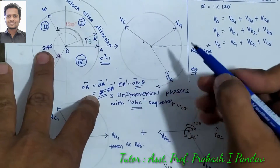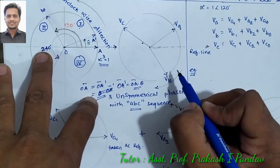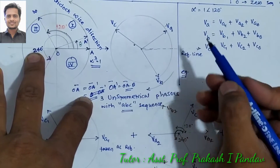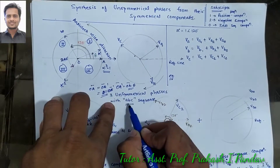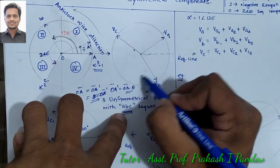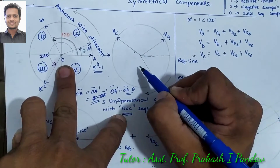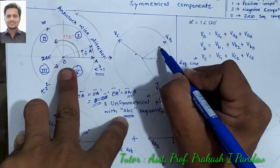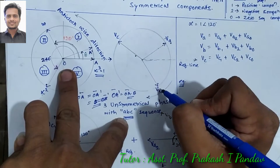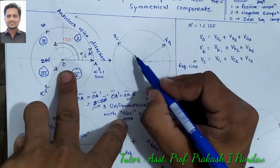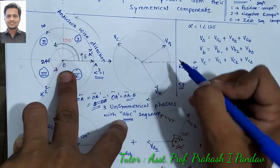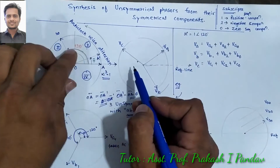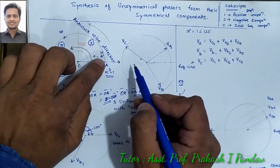Now if we take an example of a faulted system in which an unsymmetrical fault has occurred, we have unsymmetrical phasors with ABC sequence. After the fault, my A phase voltage will come to this position, my B phase voltage will come to this position, and my C phase voltage will come to this position. The sequence is ABC, meaning clockwise direction.